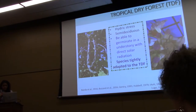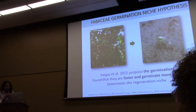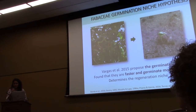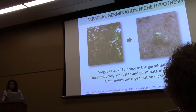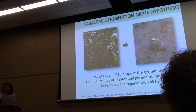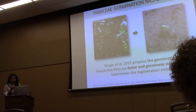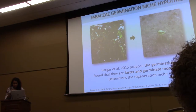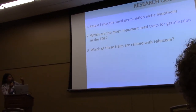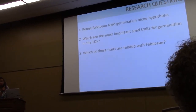For Fabaceae, which is the richest family in this forest, there is a hypothesis about niche germination. It proposes that germination in this family is faster and greater than in other families in the tropical dry forest. So we wanted to test whether that hypothesis is correct, and we framed it as the Fabaceae germination niche hypothesis.